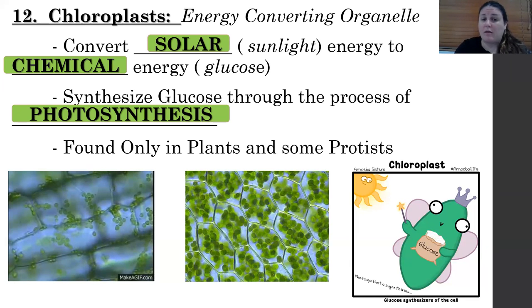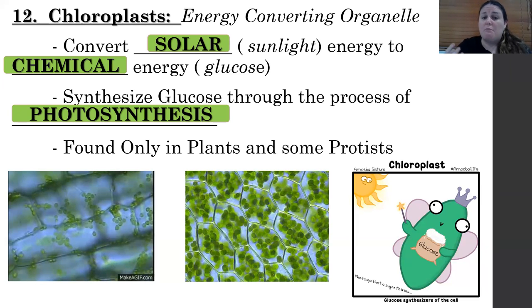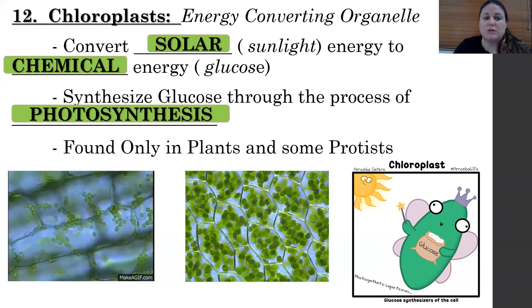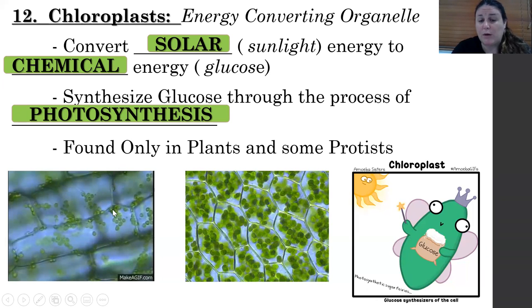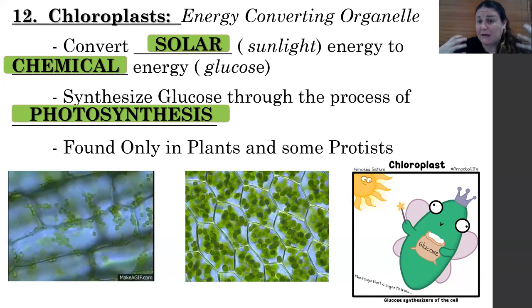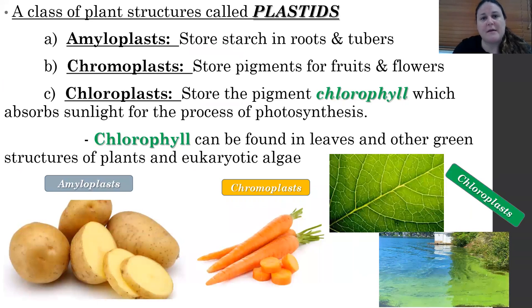This chloroplast organelle is membrane bound, so it's found in eukaryotic cells, but only in things like plants and algae — algae is considered a protist. You can see these little green jelly beans floating around in cells; they look like little green light-absorbing jelly beans.